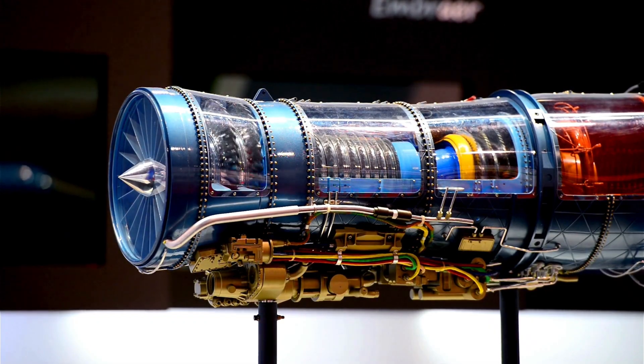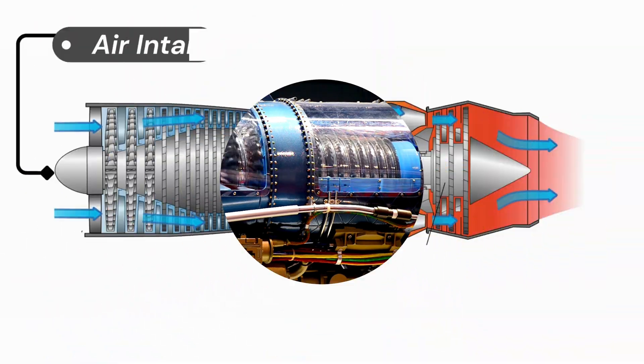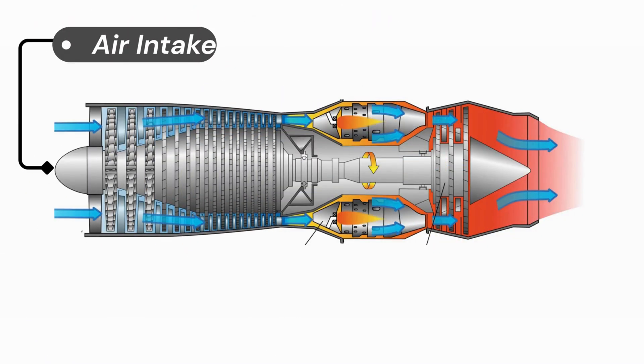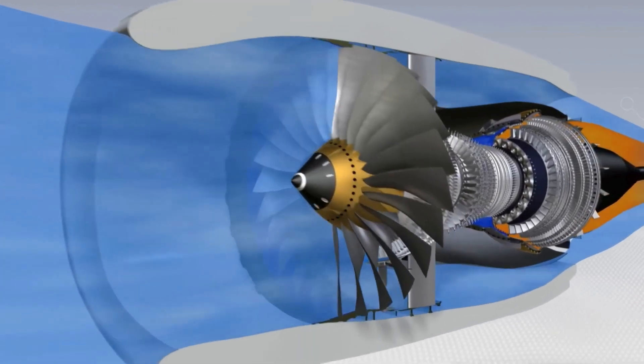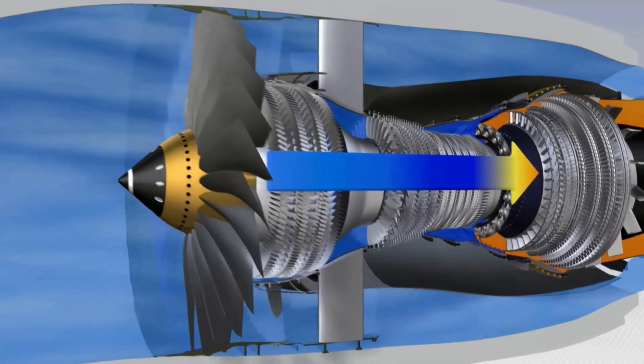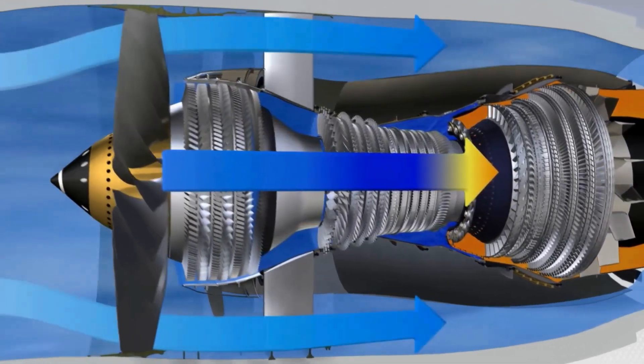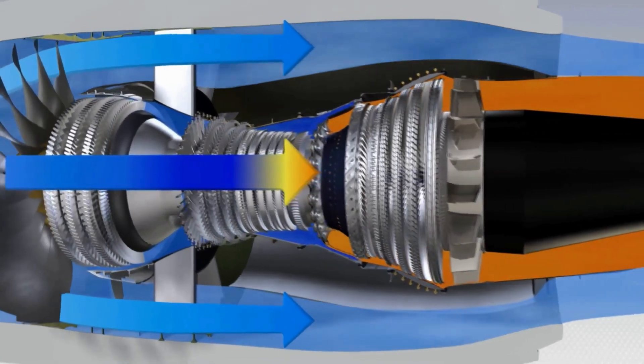But how does each part of this machine actually work? Let's break it down. It starts with the air intake, the fighter jet's first point of contact with the atmosphere. It acts like a smart funnel, capturing high-speed air and slowing it down, especially critical at supersonic speeds so that it flows smoothly into the engine.